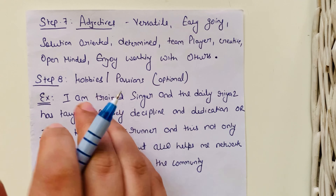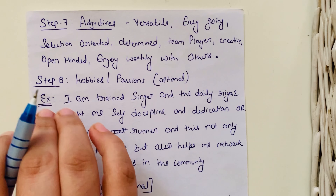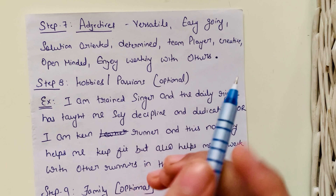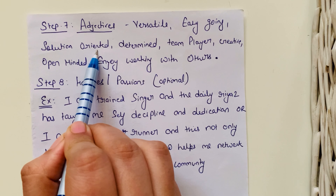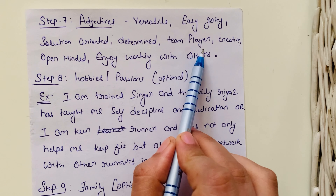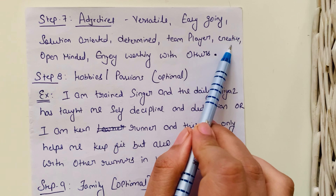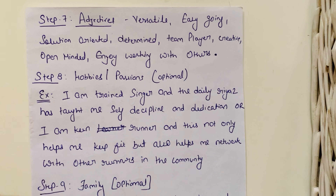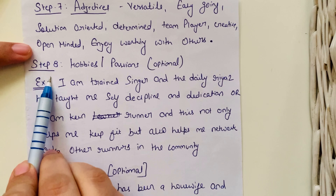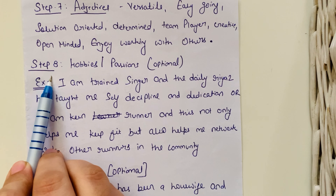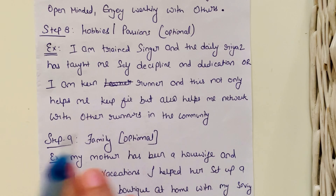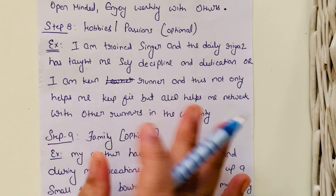Step number seven is adjectives. Use descriptive adjectives to describe yourself to the interviewer. For example, you could be versatile, easygoing, solution-oriented, determined, a team player, creative, or simply someone who enjoys working with others.